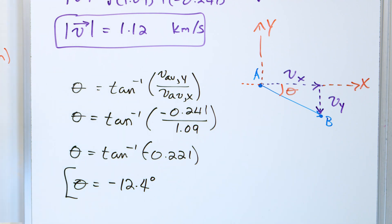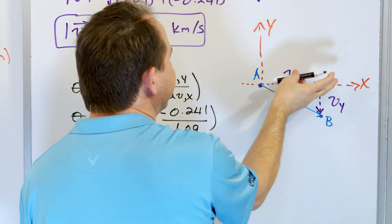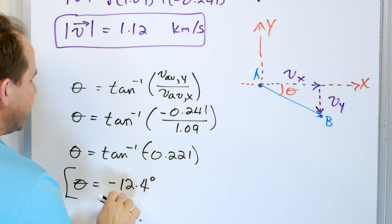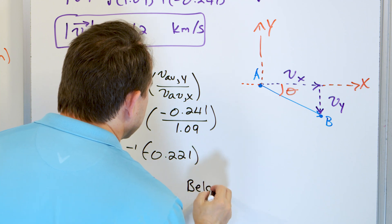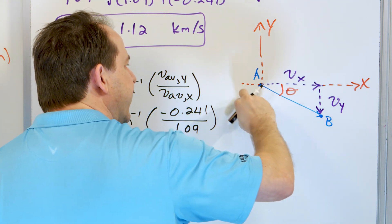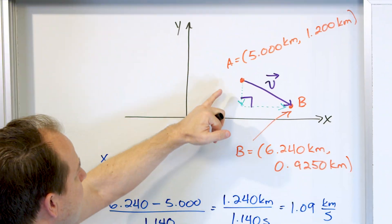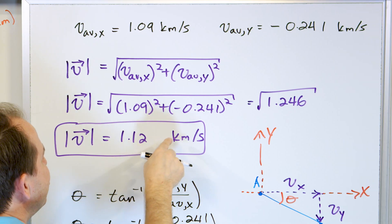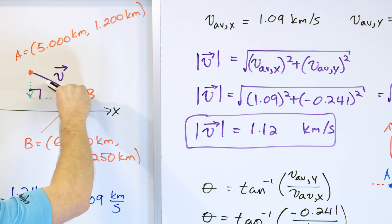What does negative 12.4 degrees mean? In an x-y coordinate system, angles are measured up from the positive x-axis, so a negative angle means you go the other way — 12 degrees below the horizontal. This is below the x-axis. We could convert this to a positive angle near 360 degrees, but it's easier to say negative 12.4 degrees, which just means the meteor is slanted downward at 1.12 km/s at an angle 12.4 degrees below the local horizontal.